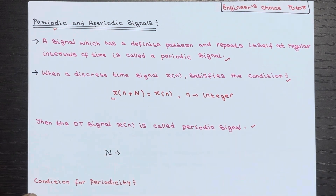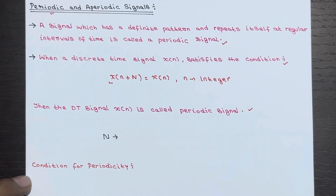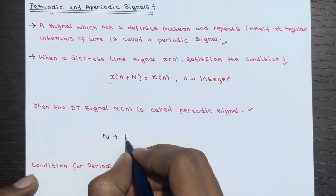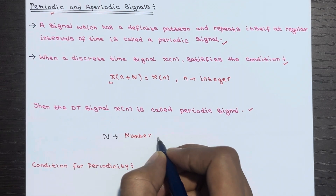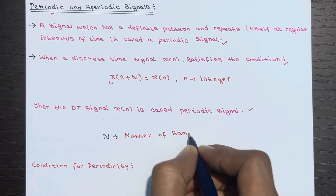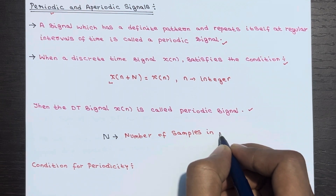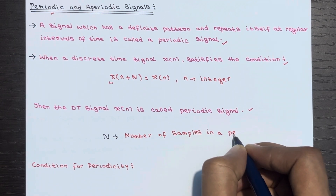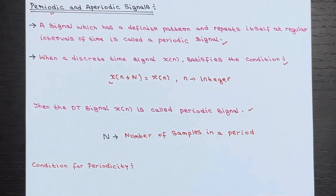This capital N represents the number of samples in a period — you can also say the number of samples of a period.